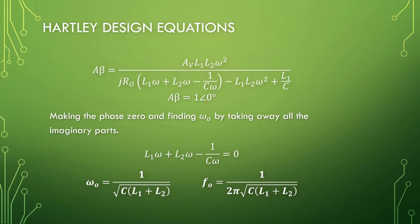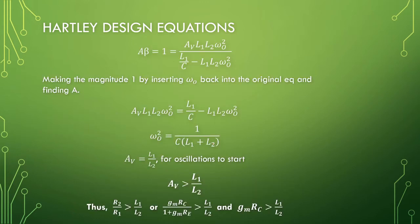So we've taken care of this phase of 0. Now we should find out where the loop gain is 1. This is what we have left in our equation. Substituting omega 0 squared in it, we will find that inductor 1 over inductor 2 is the ratio for our gain. This is opposite from what we had for the Colpitts oscillator where it's C2 over C1.